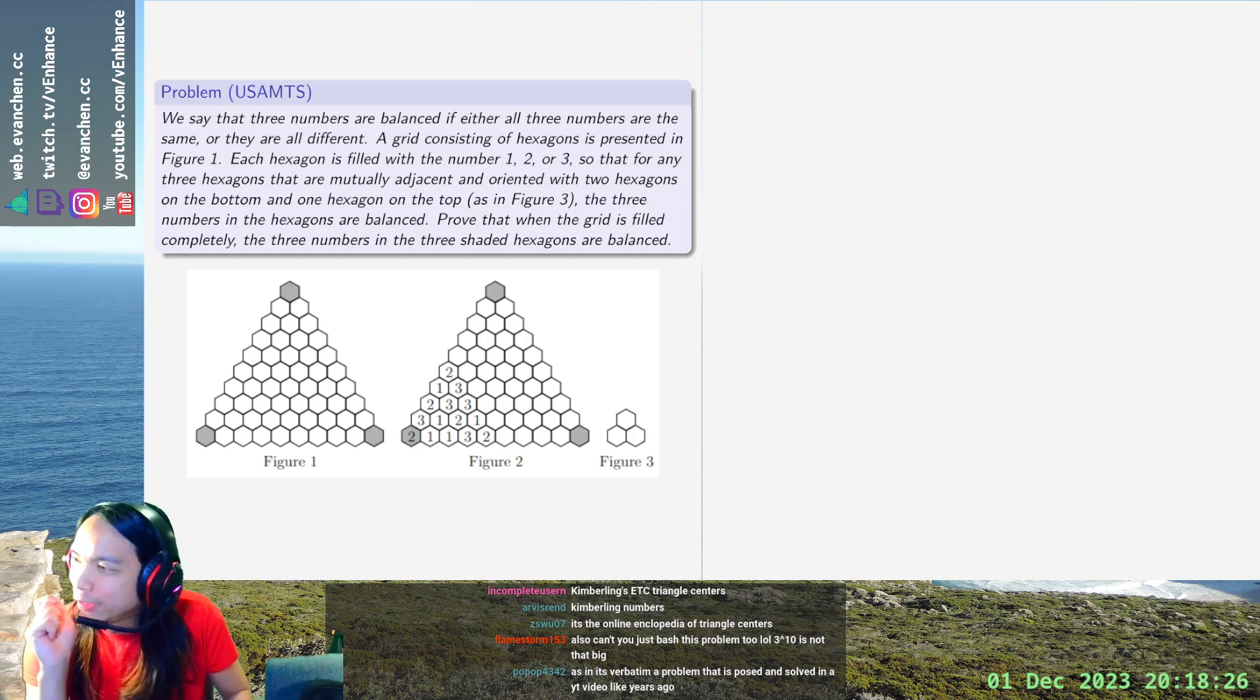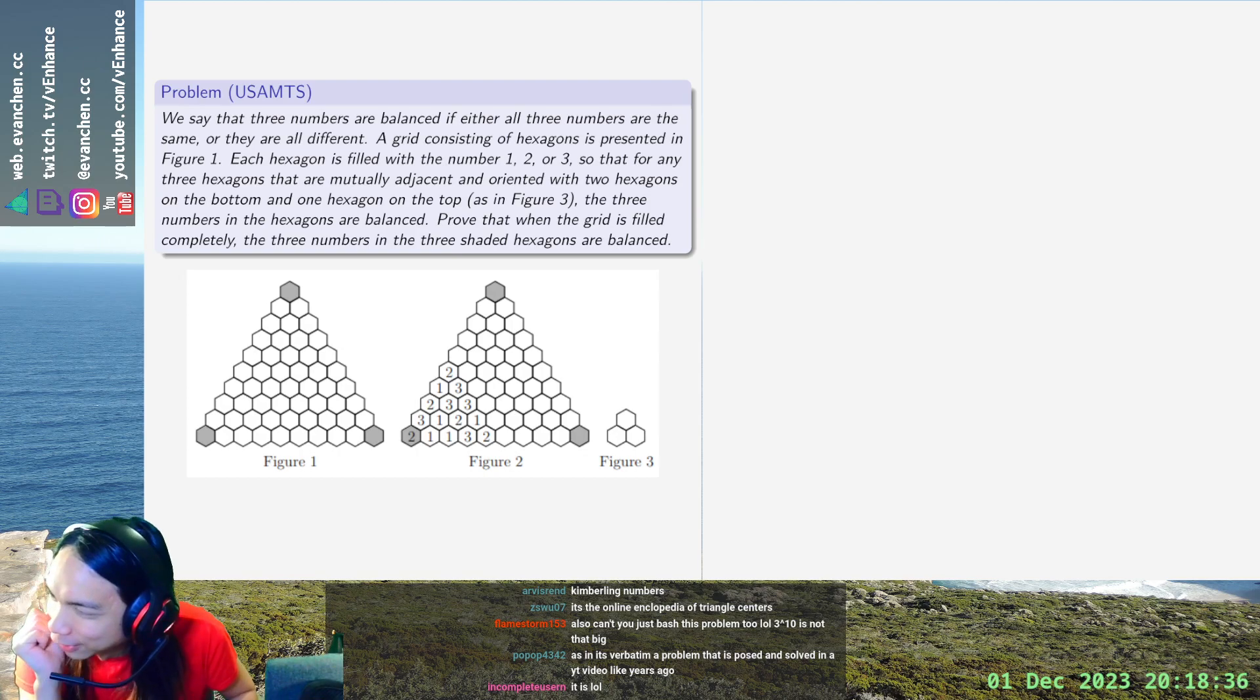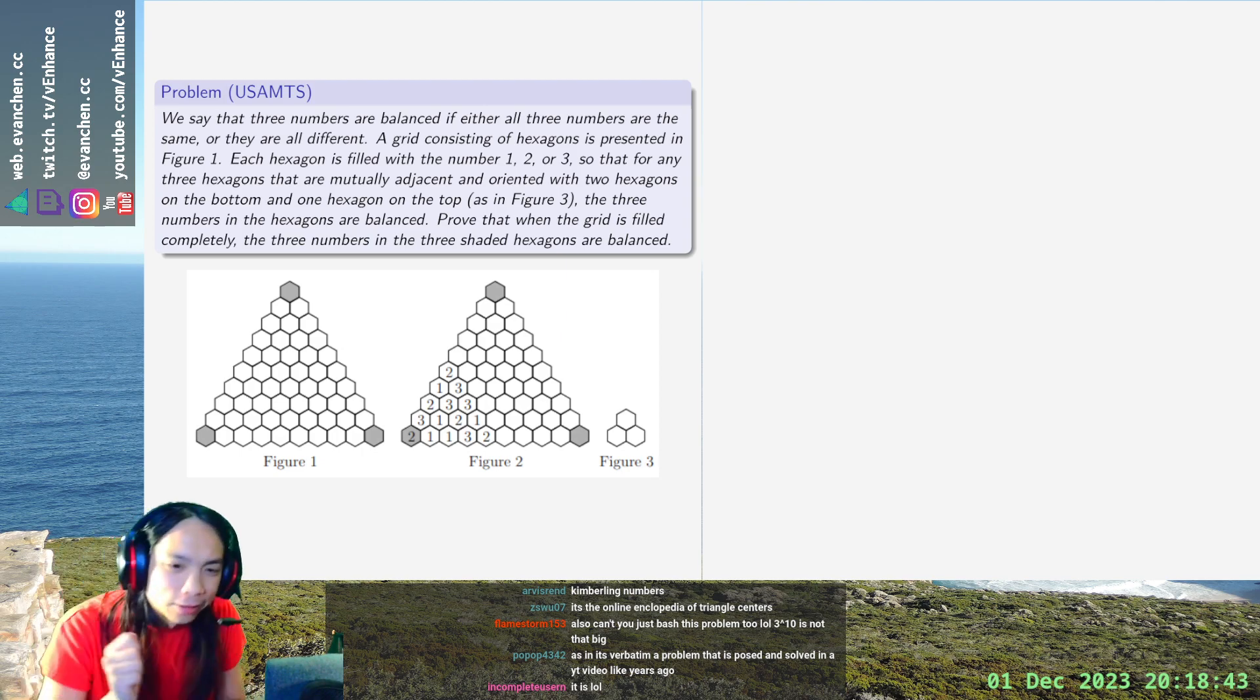In this problem, I'm given a giant hexagonal grid, looks like the one in figure one. And the first thing I have to do is do the really difficult task of counting how many cells it has. So, let's see, one, two, three, four, five, six, seven, eight, nine, ten. Okay, there appear to be ten rows. Great, okay.